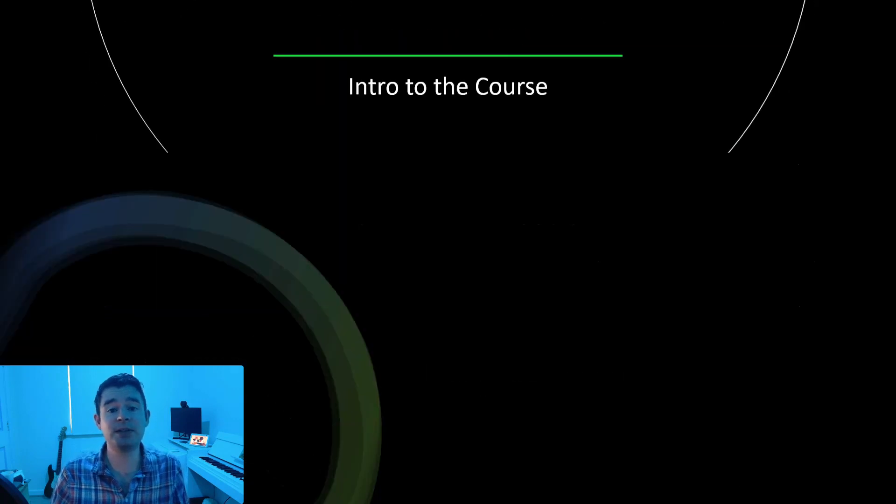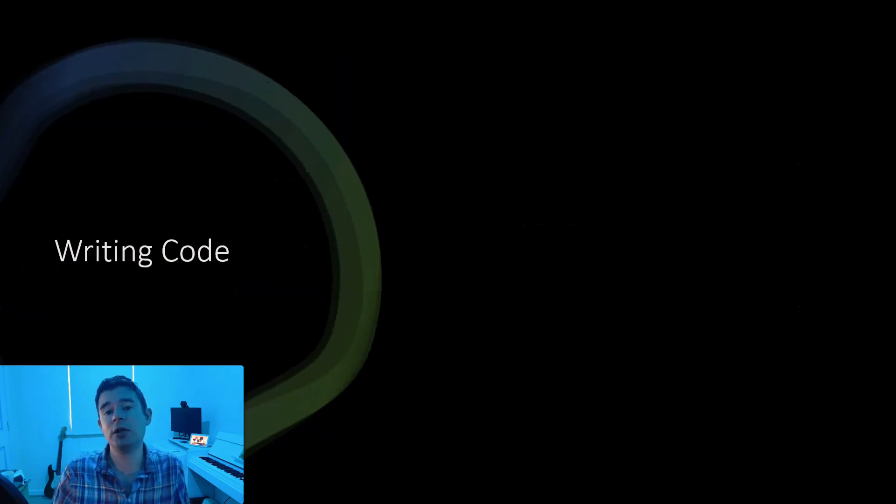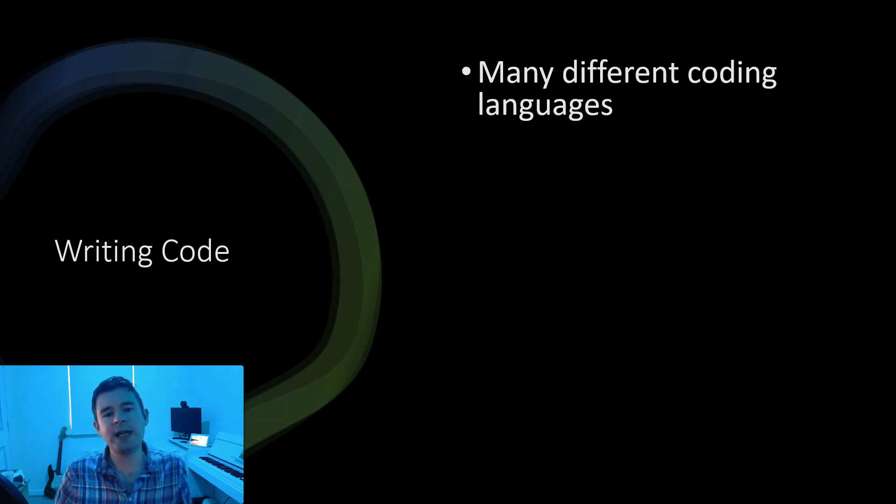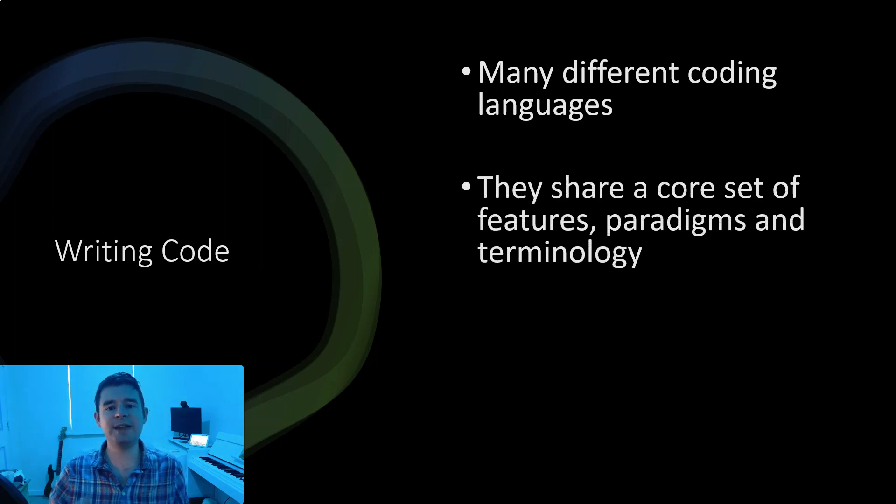Now there are many different types of coding language. So which language are we talking about? Well we're not looking at a specific language in this course. Although there are many different coding languages, we find that they all share a common set of features. And if you have an idea of how to implement these features in one language, you'll already have a very good idea of how to implement that same feature in a second language.